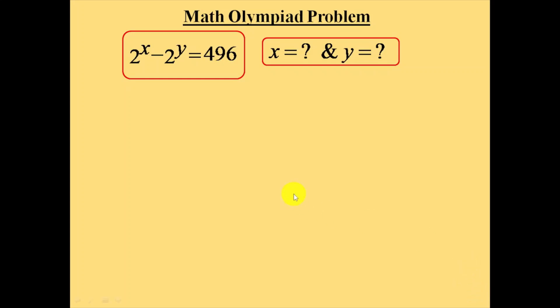Hello everyone. In this session, we need to calculate the value of x and y in the equation 2 power x minus 2 power y is equal to 496.